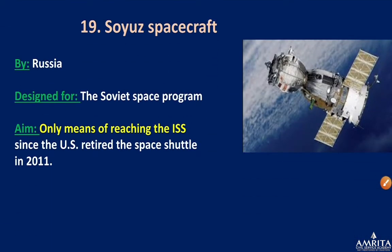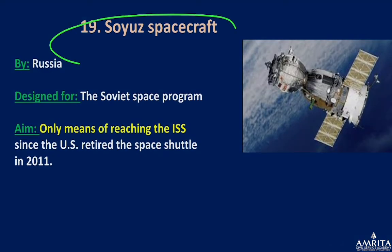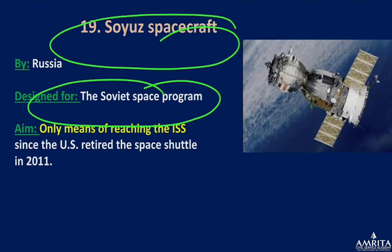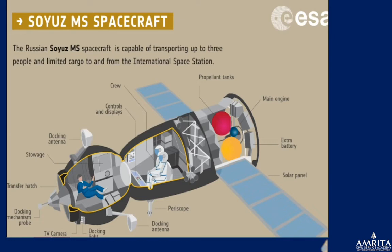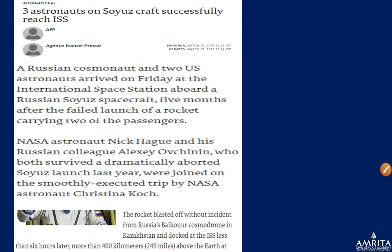Soyuz aircraft: The Soviet/Russian Soyuz is currently the only vehicle to reach the International Space Station since the US retired its space shuttle in 2011. Russia used Soyuz to send its humanoid robot FEDOR to the ISS. Soyuz is capable of transporting up to three people and unlimited cargo to and from the ISS.